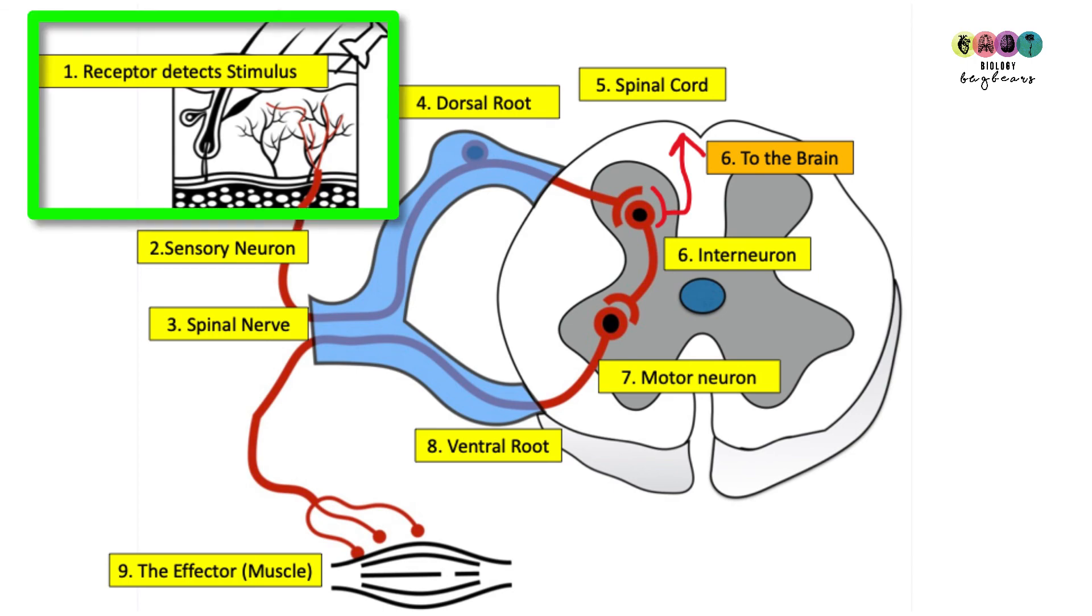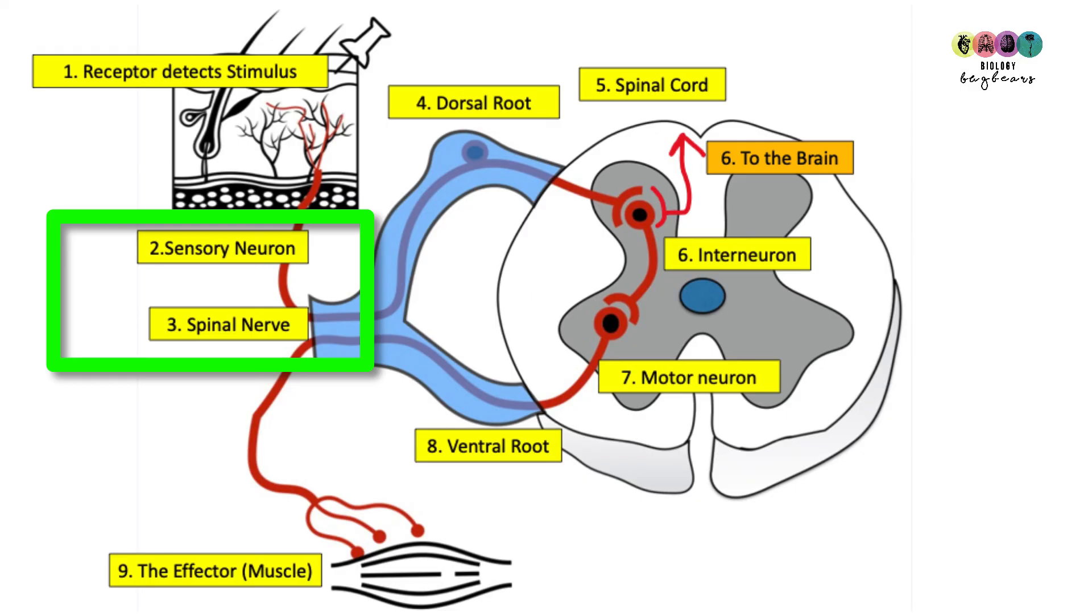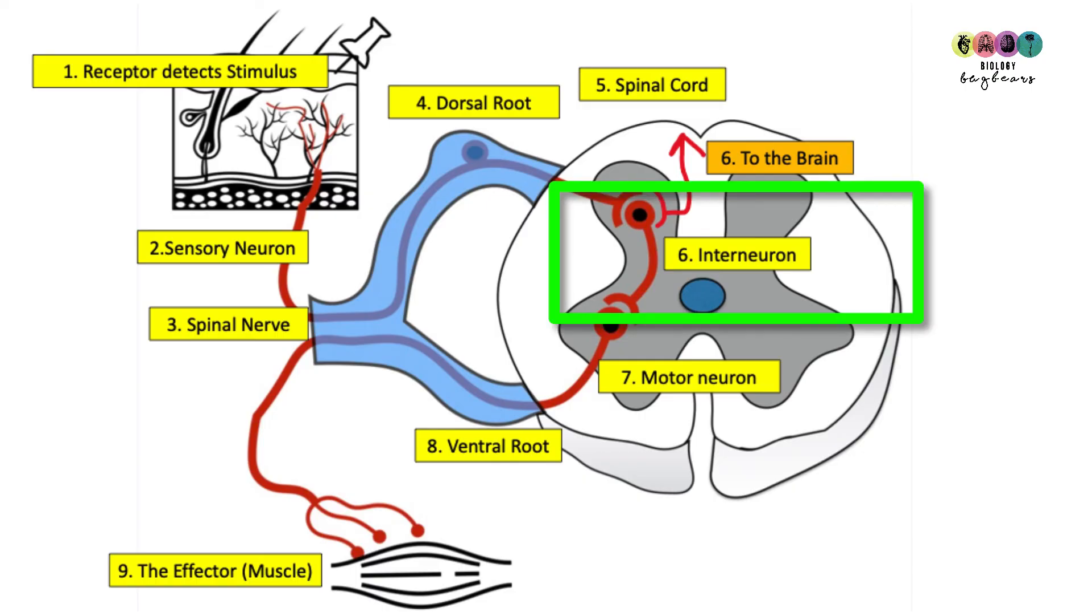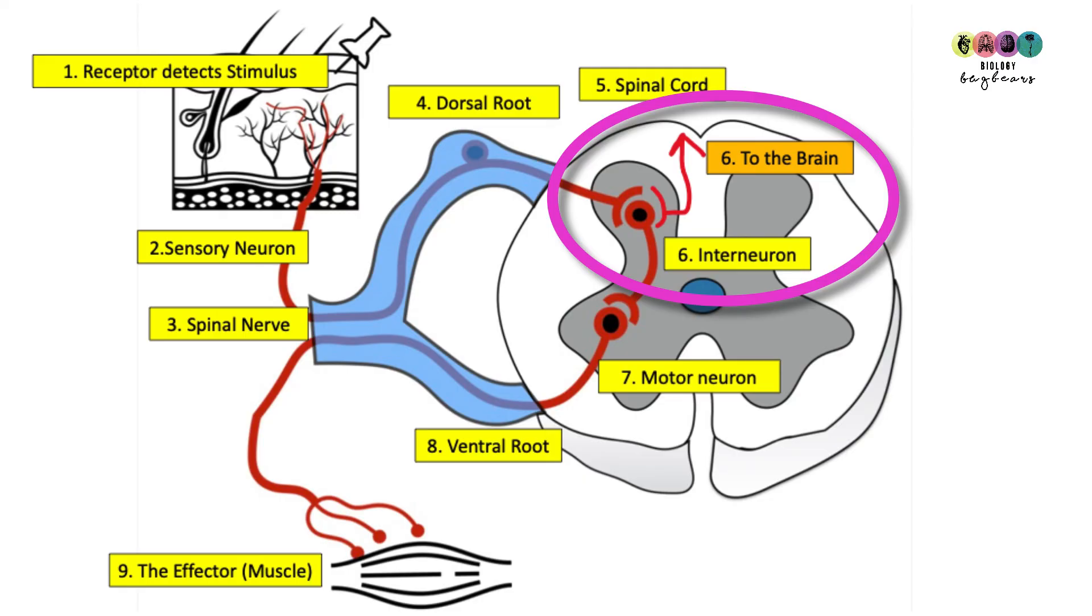We're going to talk about the pin sticking in someone's skin here. That's the stimulus, it's the pain and the pain is picked up by specialized receptor cells in the skin. This results in an electrical impulse which is carried by a sensory neuron into the spinal cord through a spinal nerve. The sensory neuron enters the spinal cord through the dorsal root. Once inside the spinal cord the impulse is transferred to an interneuron and at the same time it's also passed to another neuron that transfers the impulse to the brain. So simultaneously the impulse is going two places, to the brain and also via an interneuron towards a motor neuron.